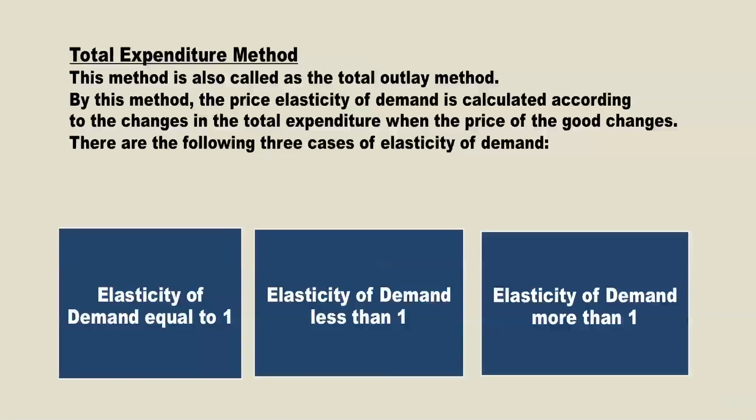The total expenditure method is the third method of calculating price elasticity of demand. This method is also called the total outlay method. By this method, the price elasticity of demand is calculated according to the changes in total expenditure when the price of the commodity changes. There are three cases: elasticity of demand equal to 1, less than 1, and more than 1.